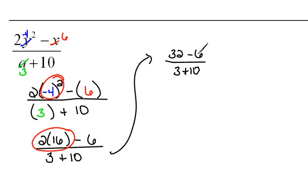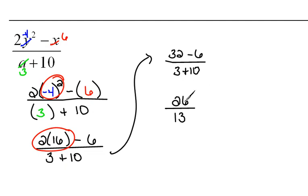In the numerator, 32 minus 6 would be 26 — the bigger number is 32, so the sign stays positive — over 3 plus 10. We add and keep the sign the same, positive 13. Now we're dividing: 26 divided by 13 would be 2, and because the signs are the same, the answer is positive.